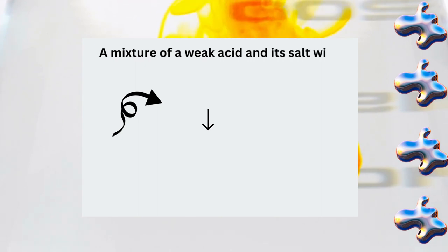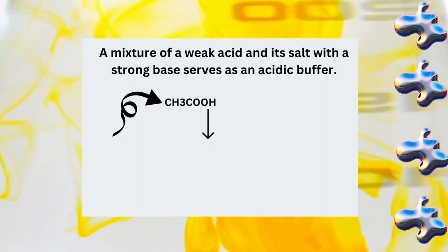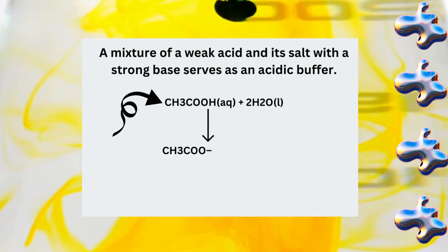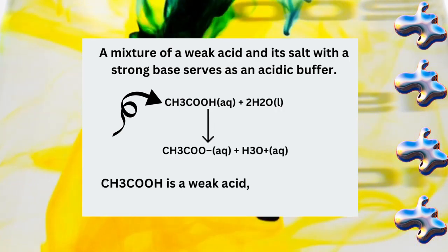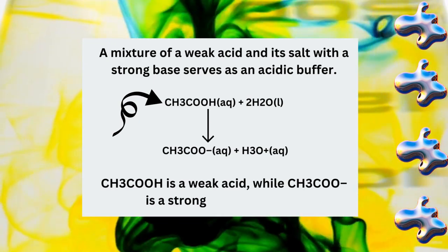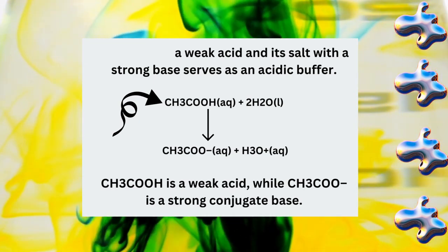A mixture of a weak acid and its salt with a strong base serves as an acidic buffer. CH3COOH plus 2H2O gives CH3COO- ion plus H3O+ ion. CH3COOH is a weak acid while CH3COO- ion is a strong conjugate base.